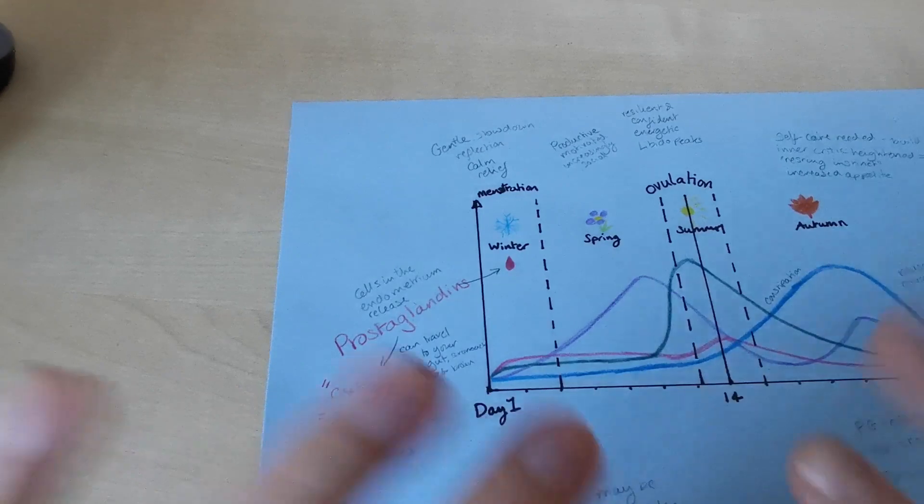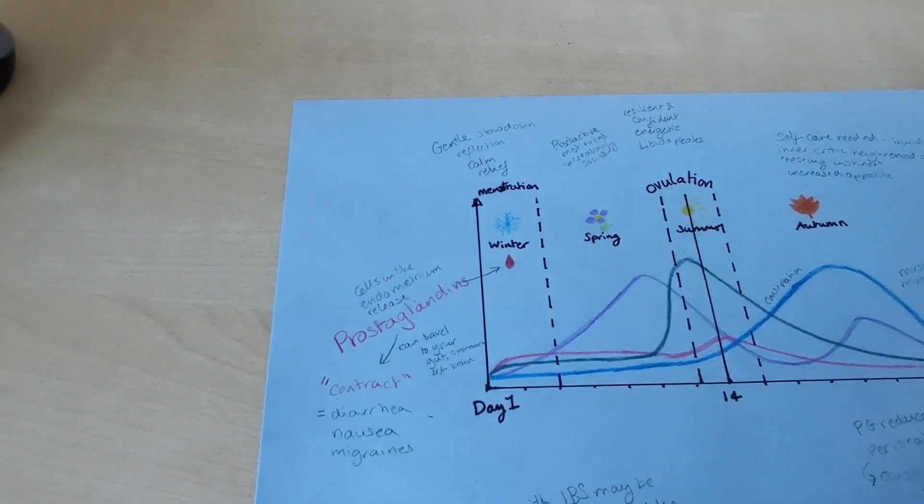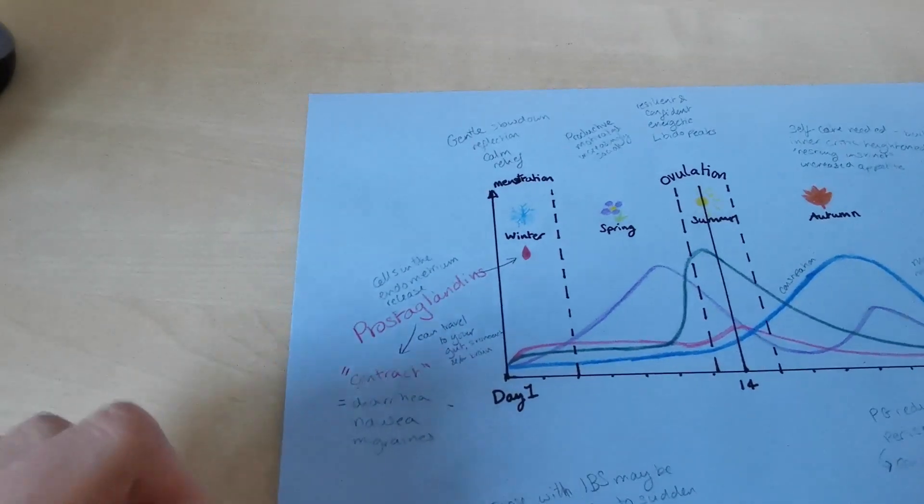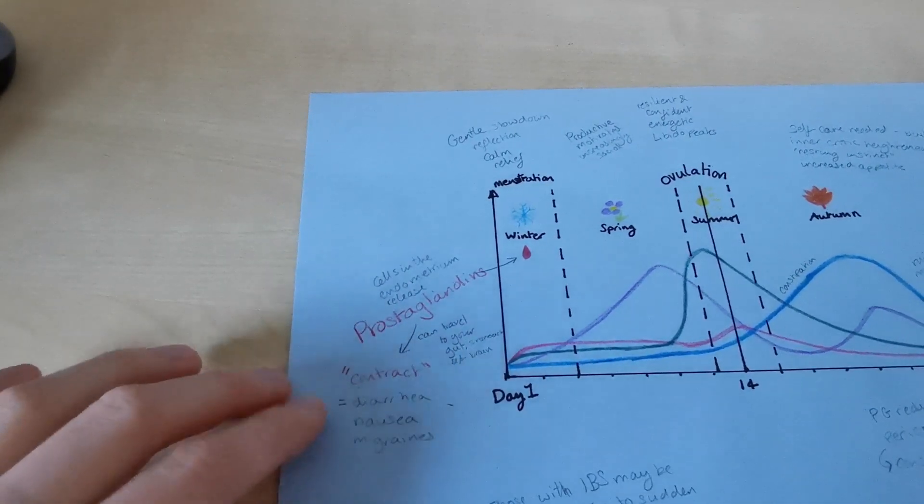However, it can sort of diffuse into the rest of your body. It doesn't just stay in the uterus. So it can go to your guts, your stomach and even your brain. So that can sometimes be the culprit of diarrhea.